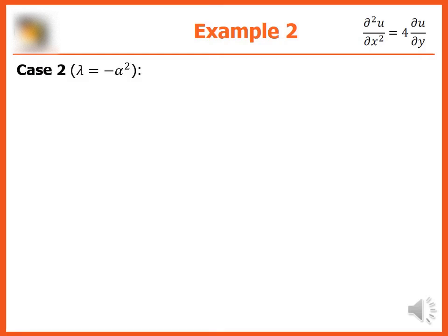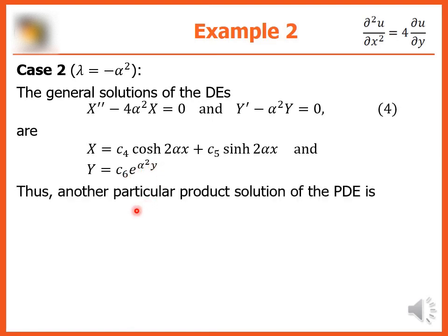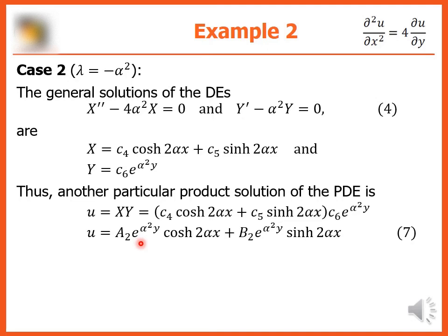For case 2, lambda equals negative alpha squared: the general solutions are X = c₄ cosh(2αx) + c₅ sinh(2αx) and Y = c₆ e^(α²y). Thus another particular product solution is u = (c₄ cosh(2αx) + c₅ sinh(2αx))·c₆ e^(α²y), or u = a₂ e^(α²y) cosh(2αx) + b₂ e^(α²y) sinh(2αx), where a₂ = c₄c₆ and b₂ = c₅c₆.